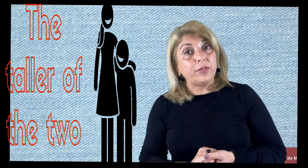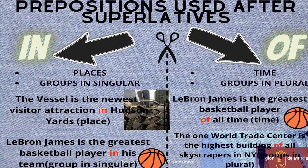Now that the form is clear, we can highlight some other aspects. In Spanish, we use the superlative form when talking of a two-member group, but in English we use the comparative. When we say in Spanish 'el más alto de los dos,' we say in English 'the taller of the two.' After superlatives, we can use the following prepositions in English: 'in' for places and groups in singular, and 'of' for time and for groups in plural.